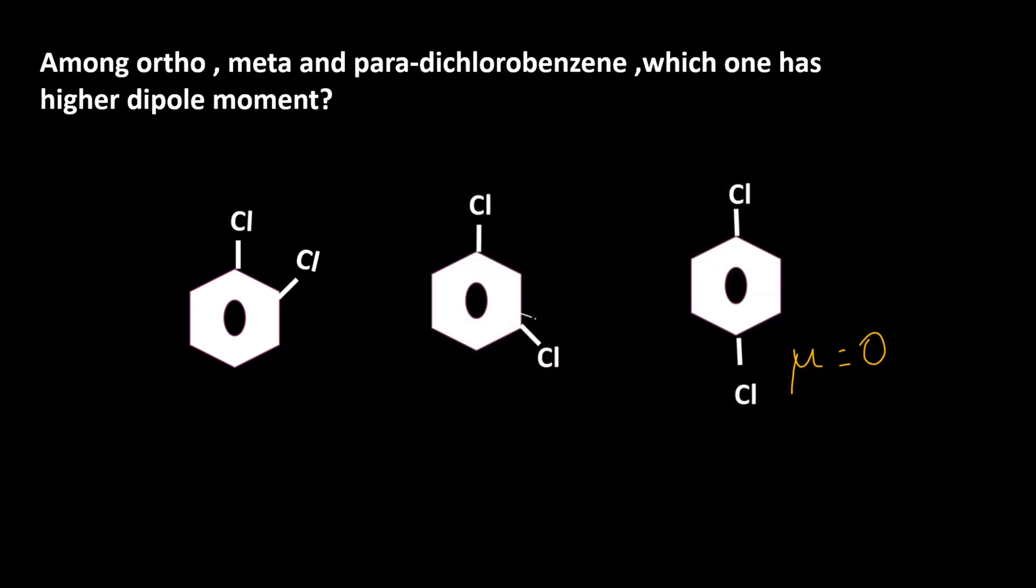For ortho, the bond angle is 60 degrees, but for meta dichlorobenzene, the bond angle is 120 degrees. So among these two, ortho has a smaller bond angle, which means the dipole moment is very high.